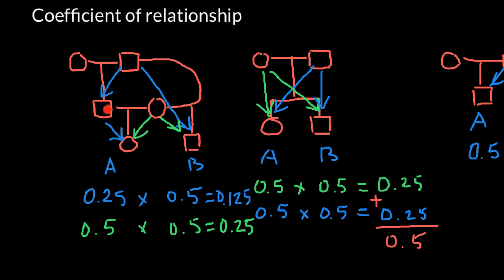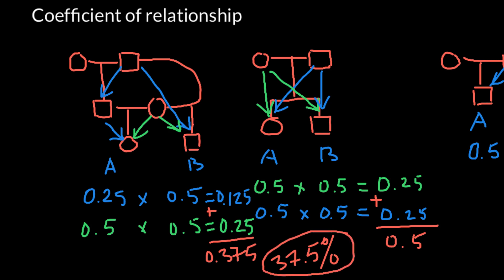Adding these two probabilities, 0.25 plus 0.125, we get 0.375, or 37.5%, of common genes. The coefficient of relationship between individual A and B equals 0.375, or 37.5%. Both answers are correct — 0.375 is given on a scale of 0 to 1, and 37.5% is given on a scale of 0 to 100%.